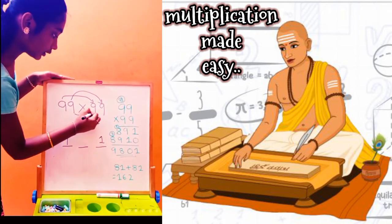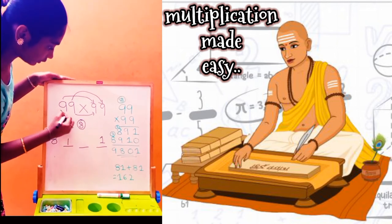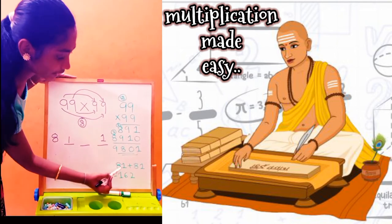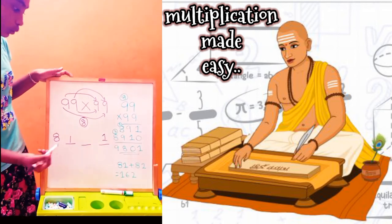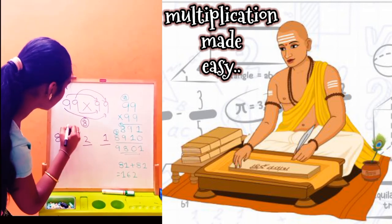Next, 9 into 9, 81. 9 into 9, 81. So 81 plus 81 is 162. 2 and 16 carry.